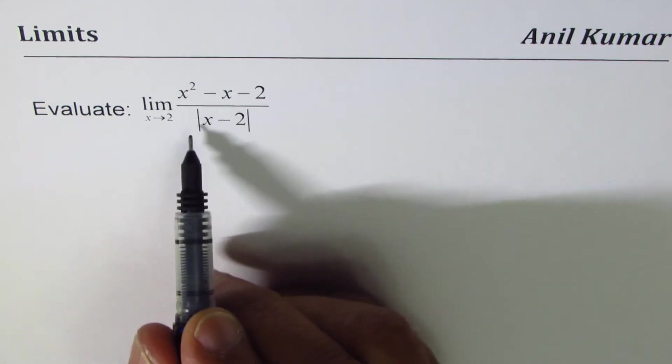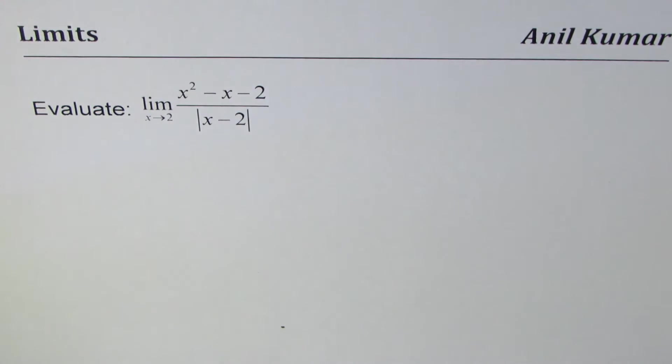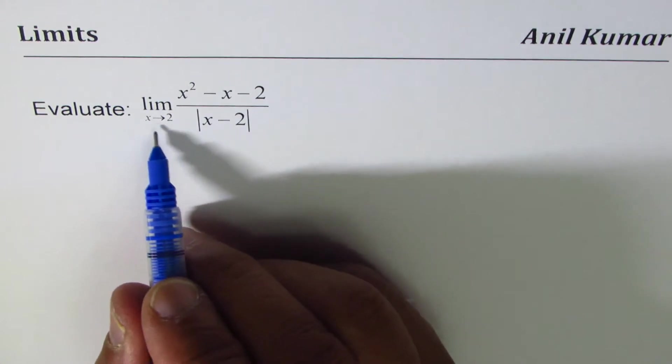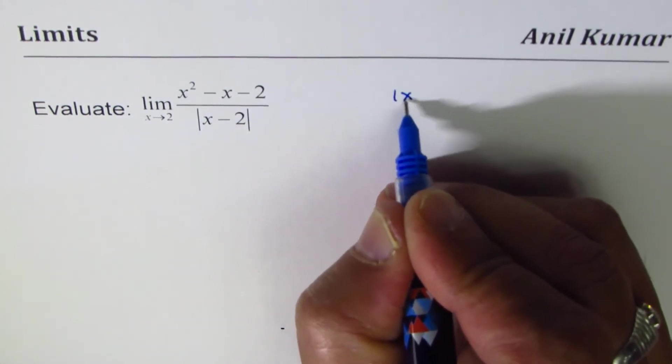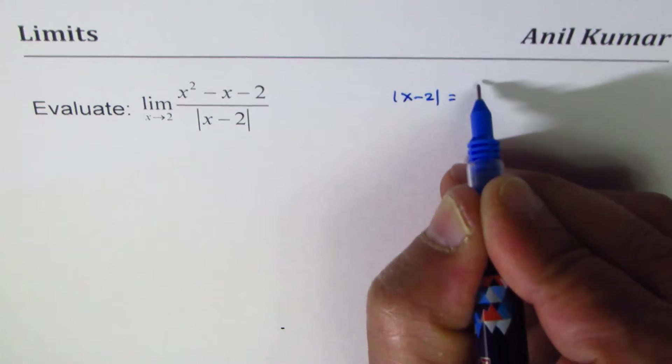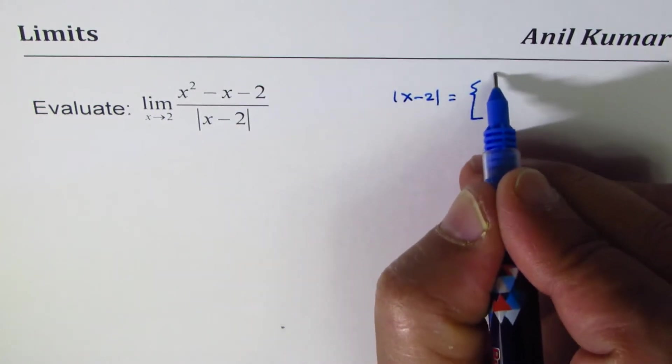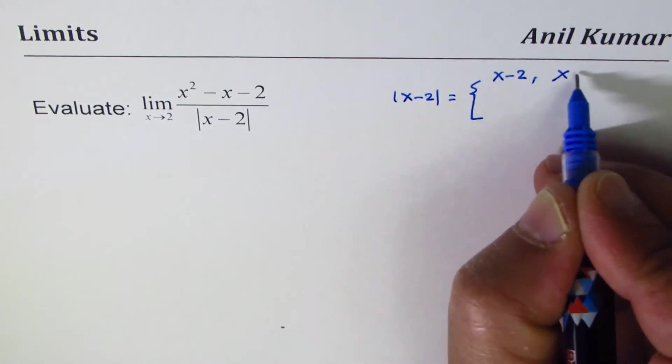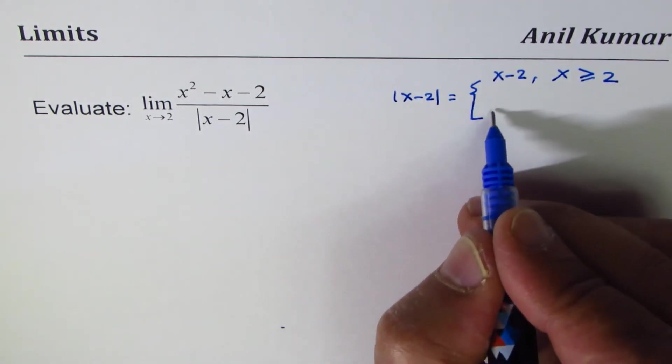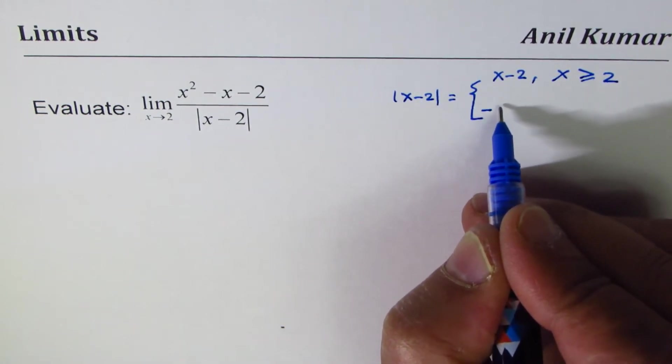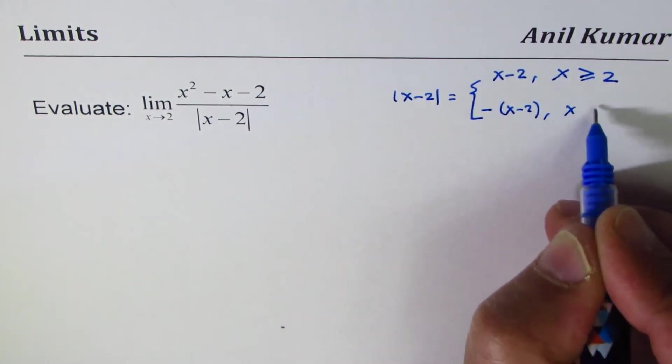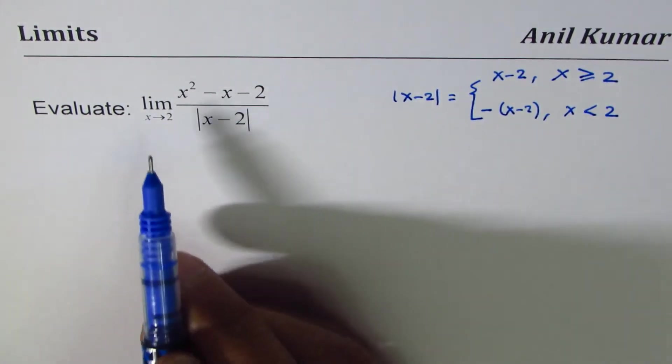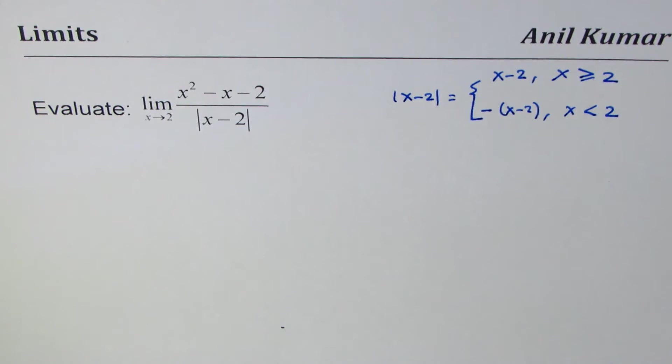Whenever you have an absolute function we need to redefine it and then find the limits. Absolute x minus 2 can be written as a piecewise function: it is x minus 2 for x greater than or equal to 2, and it is negative of x minus 2 for x less than 2. To begin with, substitute 2 here.